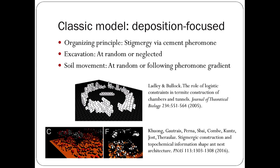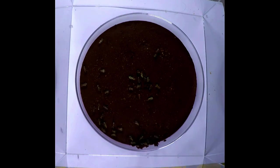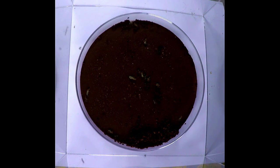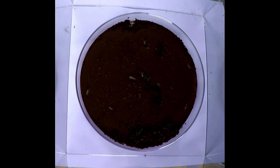Based on that view, we put termites into a dish and expected to see accumulations of soil in a few localized places and divots where soil had been removed more or less at random through the dish. That is very much not what we saw. We definitely saw accumulation in a few places, but those places were exactly the same places where they were getting the soil from.